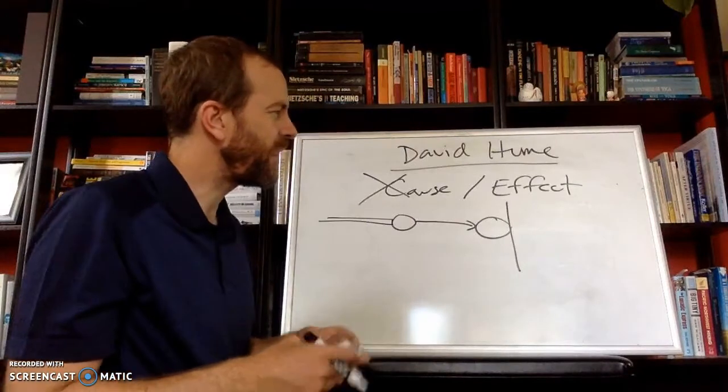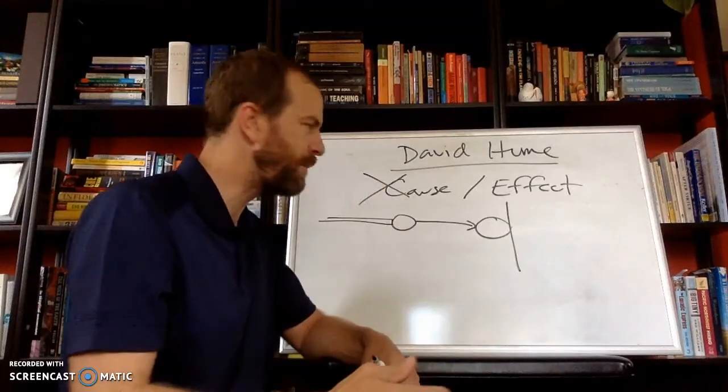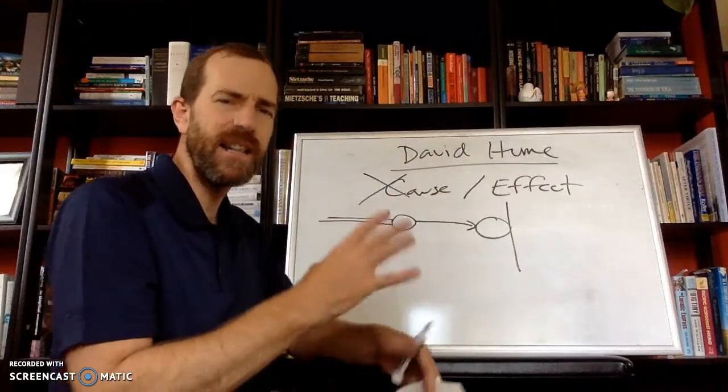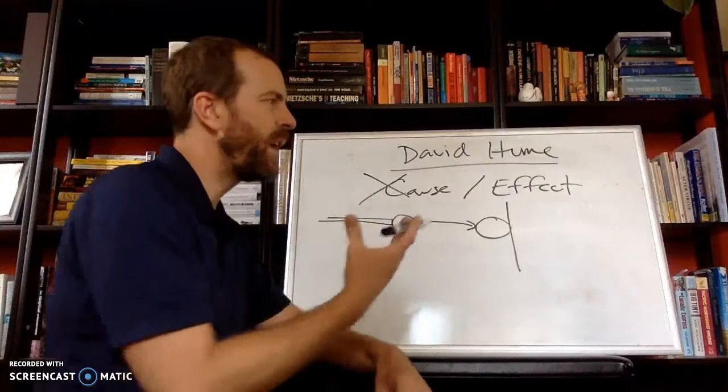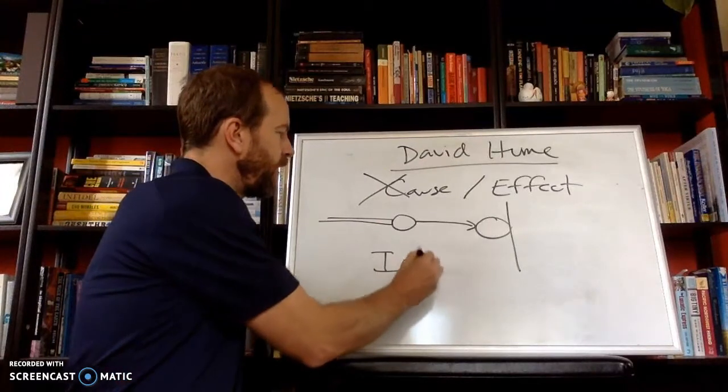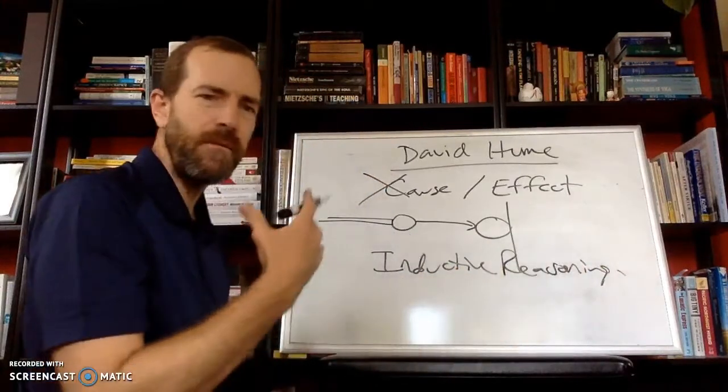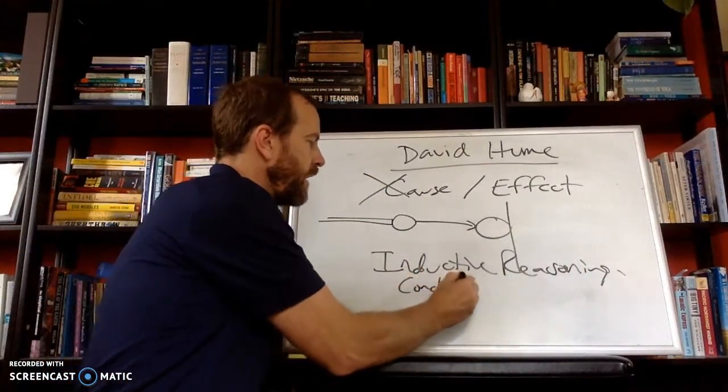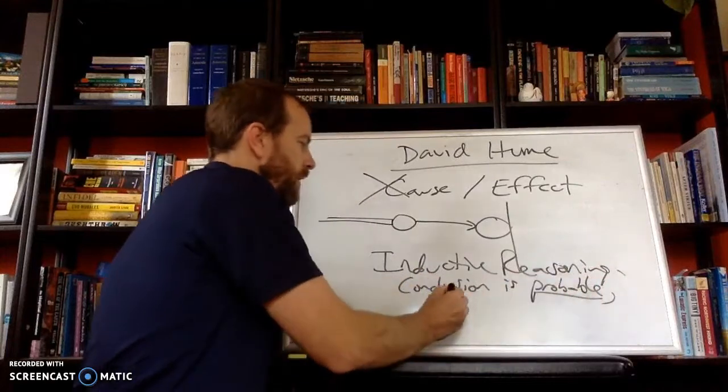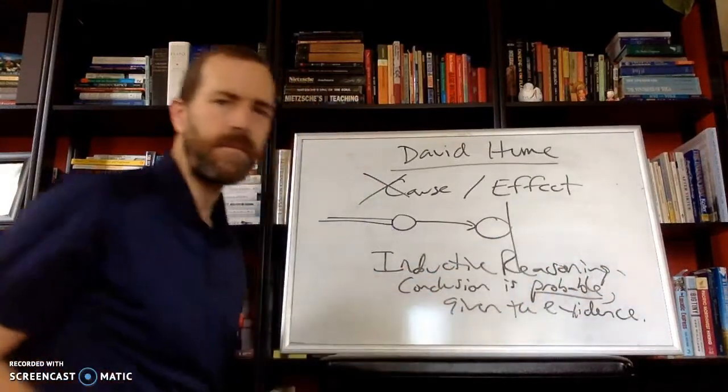It might sound kind of strange, but the idea is that all we need is we're just waiting on one counter example to throw the whole causal theory on its head. And what this means is that when we think about the idea of cause and effect, we are using inductive reasoning. And if you remember, that reasoning is when a conclusion is probable given the evidence.